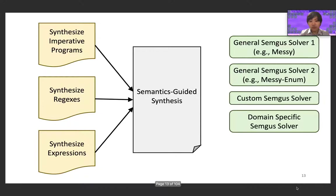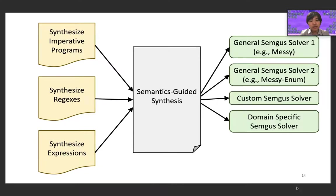One can express many different synthesis problems that can contain different semantics in the SemGUS framework—for example, synthesis problems defined over an imperative language, over regular expressions, or simple synthesis problems over expressions. Once you have a SemGUS problem, one can automatically dispatch it to multiple different backend SemGUS solvers, similar to how a compiler can generate multiple versions of machine code given a single intermediate representation. This greatly reduces the amount of work the user has to do in defining a synthesis problem.